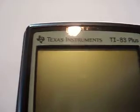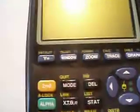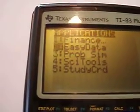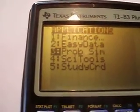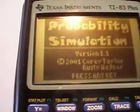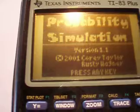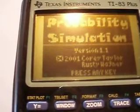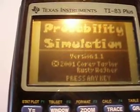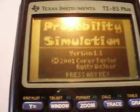In this video, I'm going to show you one of the applications that came with my calculator. I'm going to go to my apps button here, and I get a few choices. You may or may not have these on your calculator. I'm going to go to the probability simulation. Version 1.1, copyright 2001, Corey Taylor and Rusty Wagner. I guess those would be the people to contact if you wanted to get a copy of this, or maybe you can link up with someone you know who has it on their graphing calculator.